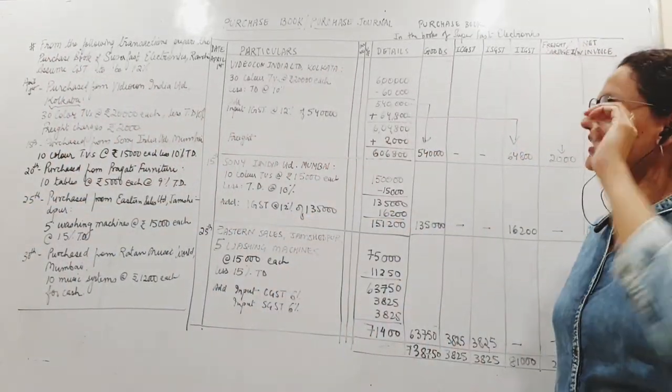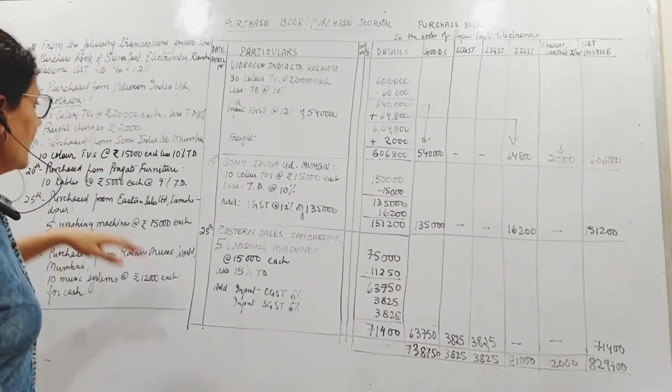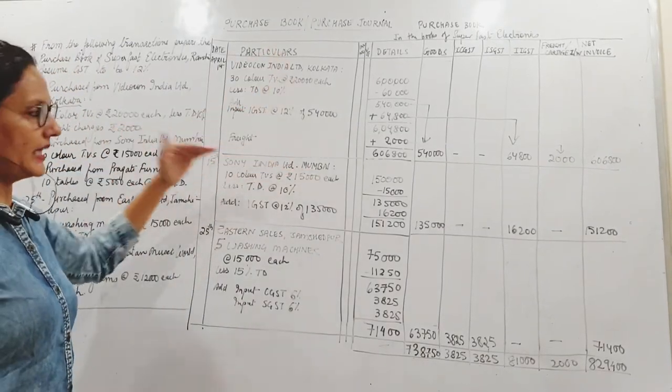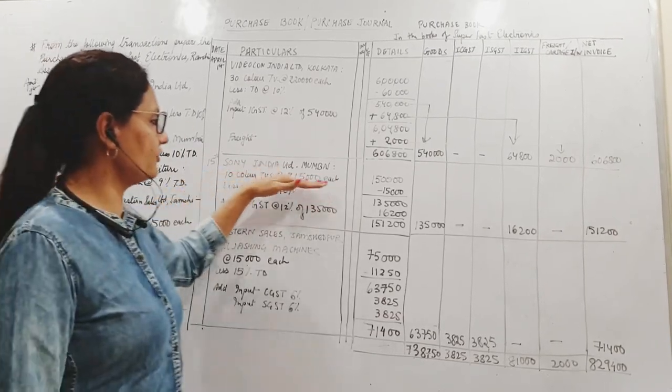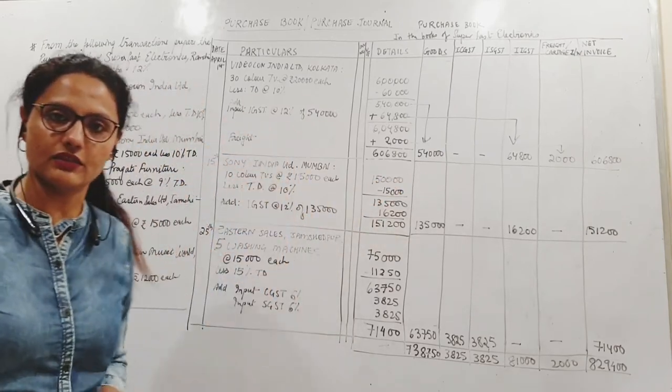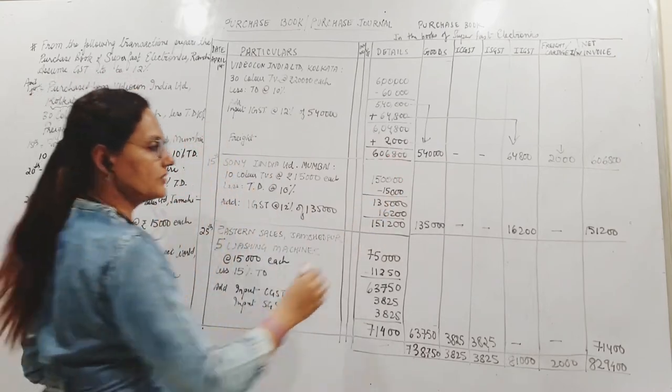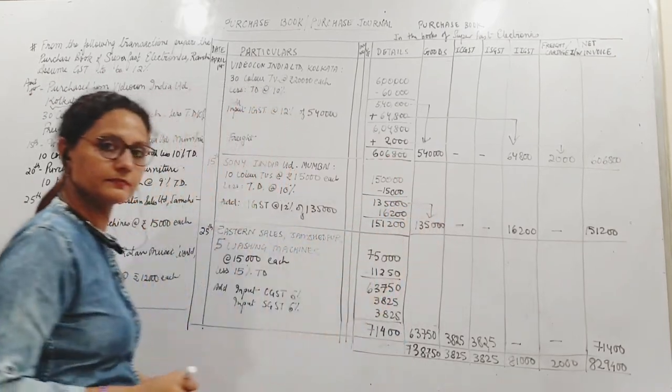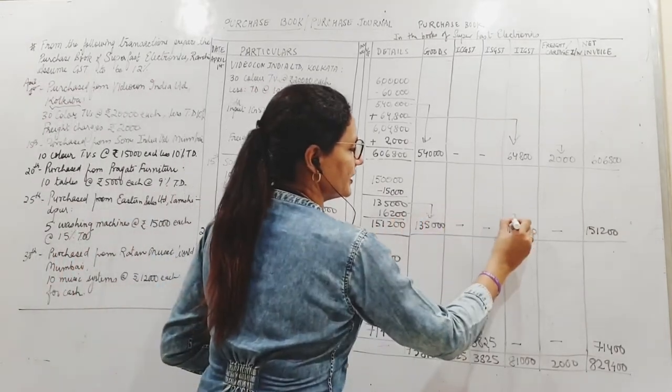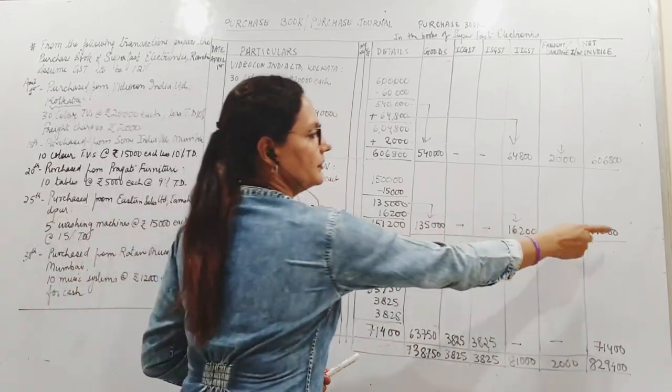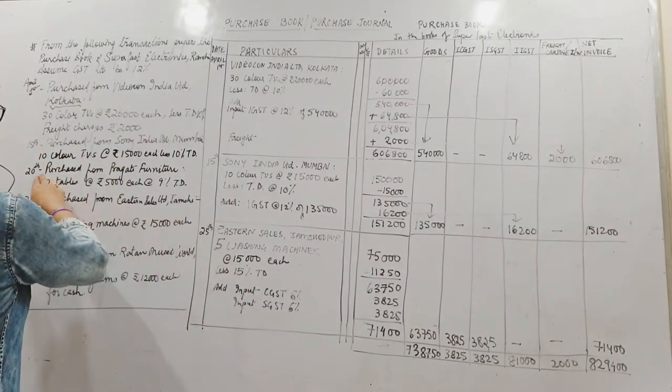Next one, 15th. Purchase from Sony India Limited, Mumbai. Interstate transaction, Mumbai and Ranchi - two different states, so here IGST again. Sony India Limited, name of creditor. What have you purchased? Color DVDs, goods, credit purchase. 15,000, 10 into 15,000 gives me 1,50,000 total. Less trade discount 5 percent, 7,500 is gone. 1,45,000 is my purchase value.